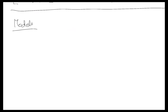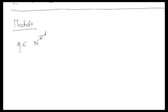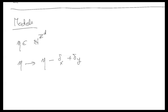Now let me talk about the models. I will go from a configuration eta in the state space N^{Z^d} — at every site in Z^d a certain number of particles. I will specify the rates at which we remove a particle at x and put a particle at y. These are the only moves allowed: a particle moves from x to y at rate proportional to eta_x times alpha_y times sigma times eta_y, with a kernel p(x,y). This is the general form. Alpha_y is allowed to depend on y, and p(x,y) must be symmetric — that is very important.